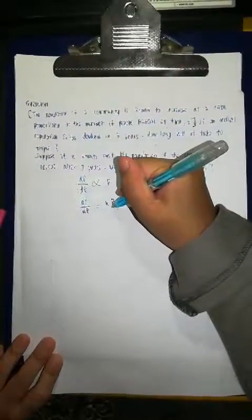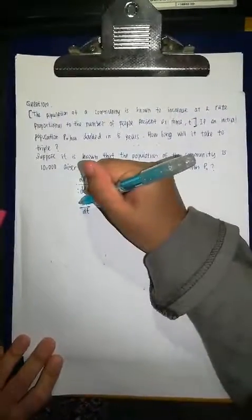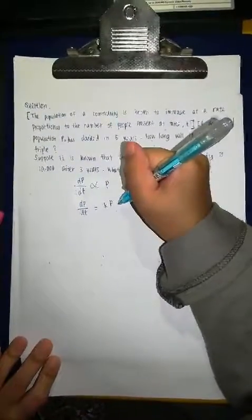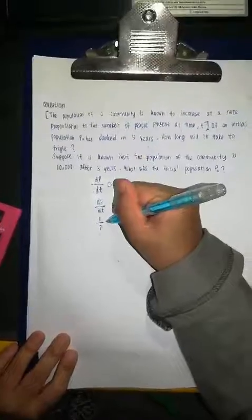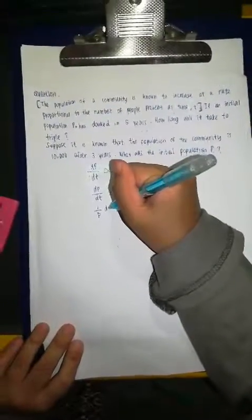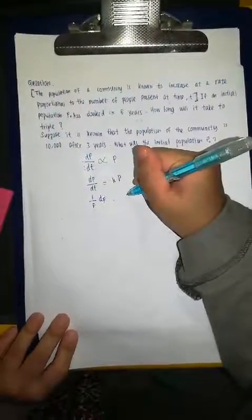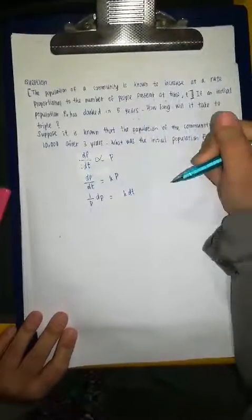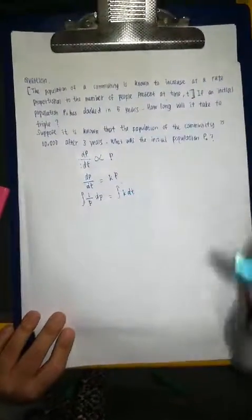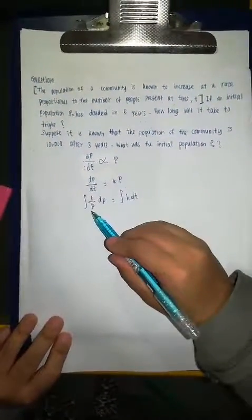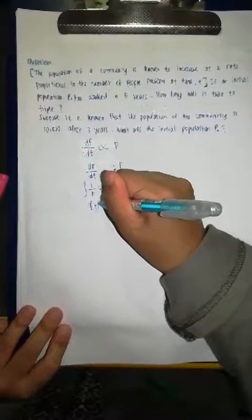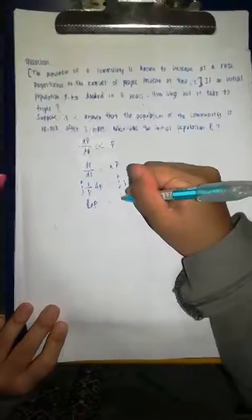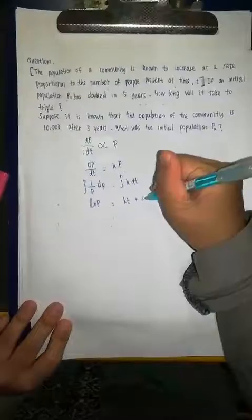And then, we move P to here and then dT to here. So, we get 1 over P dP equal to K dT. And then, we integrate both sides. When we integrate both sides, we will get ln P equal to KT plus C.